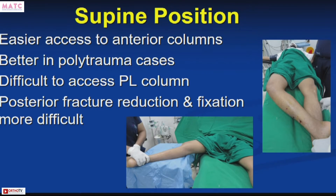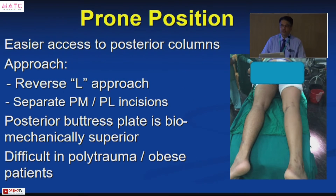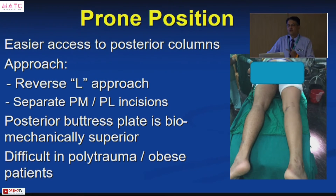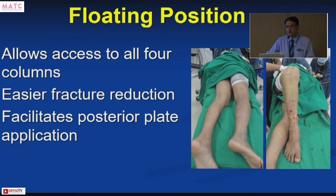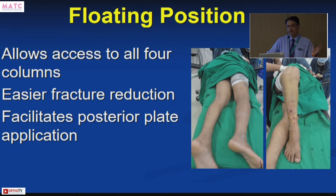Supine positioning gives excellent access to the anterior columns but makes it very difficult to fix associated posterior fractures, especially the posterolateral column. A prone position with posterior approaches is excellent for exposing and fixing posterior fractures but provides no access to the anterior column. For combined anterior and posterior fractures, surgeons had to turn the patient over between stages. Now there is the 'floppy lateral' position, which allows access to anterior and posterior approaches — including anterolateral and posteromedial — without re-draping or repositioning, giving access to all four columns.